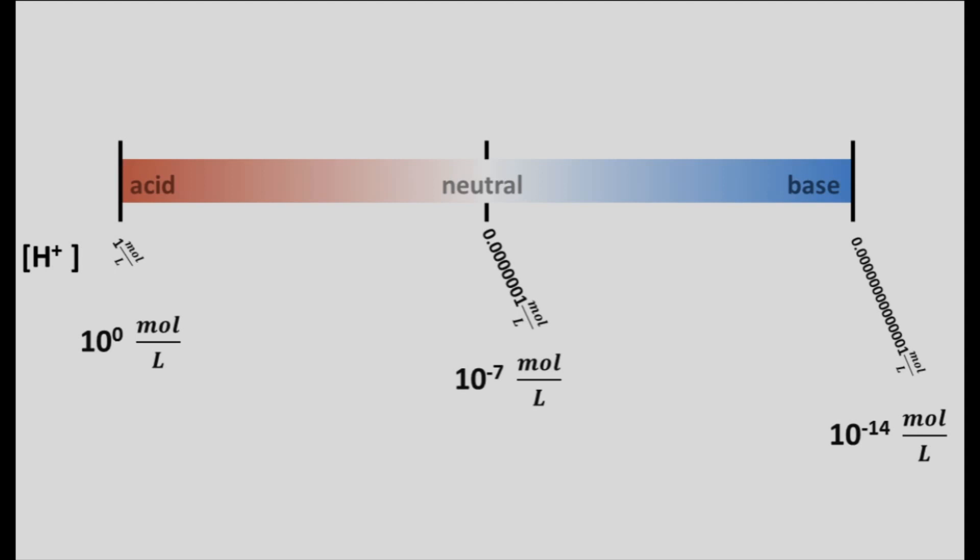Now even using scientific notation and using these exponents, it's still kind of confusing quantities to deal with. And so we simplified it even further. We took the exponent itself and used it as the reference number, and we took away the negative sign to try to limit the confusion.